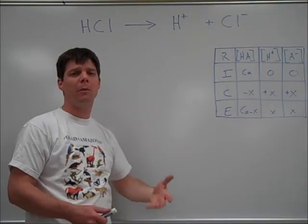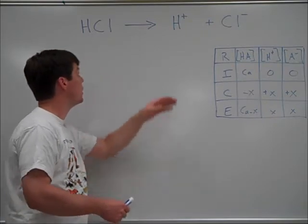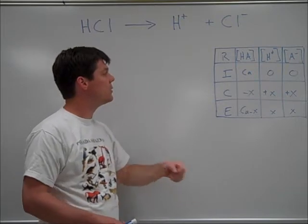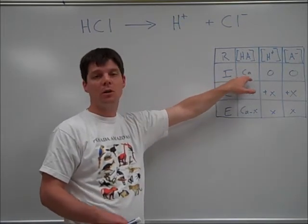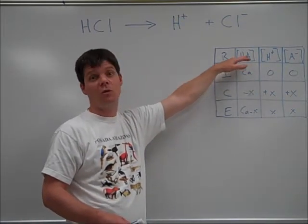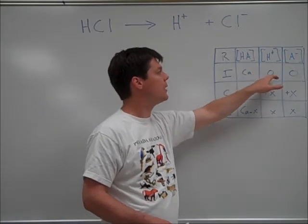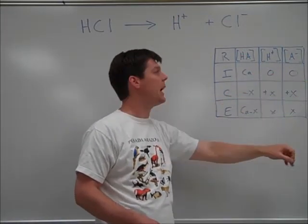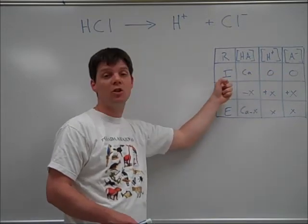If we apply a RICE table to this, we can better understand the conversion of reactants to products in this dissociation. So we have an initial amount of HA, this would be our HCl. We have an initial amount of hydrogen ions and the anions, this would be the chloride in this case. Those would be starting out initially as zero.